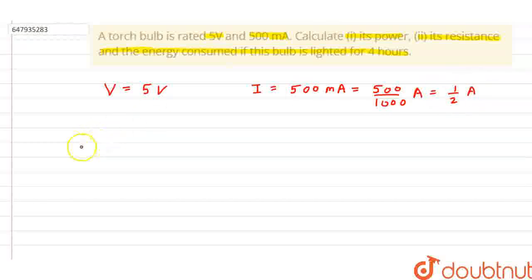We need to find one, its power. So, power's formula is power equals V I. So V I will be 5 into 1 by 2 which is 2.5 watt.